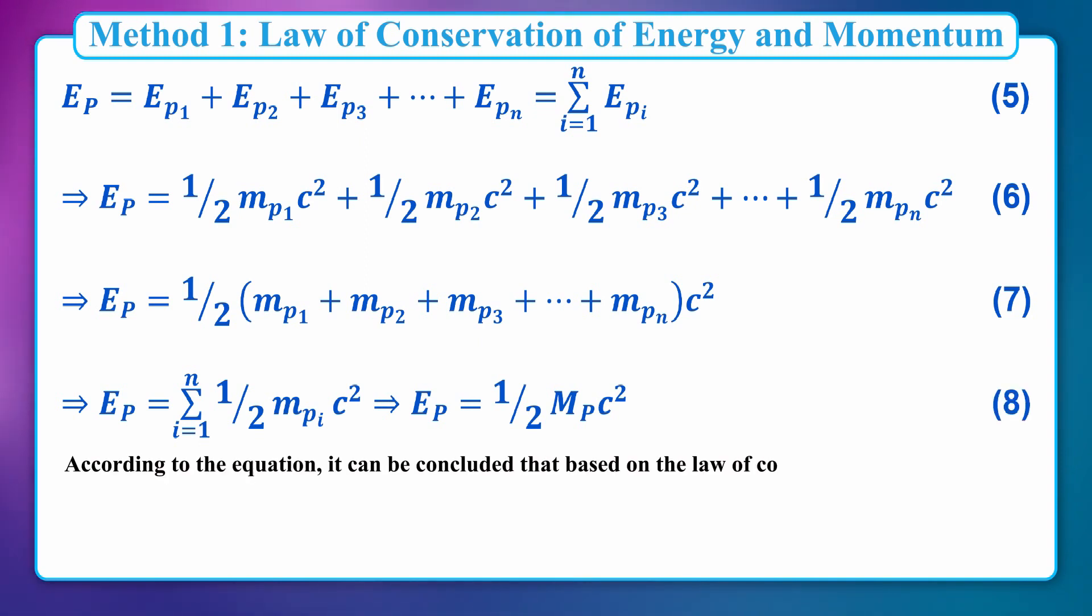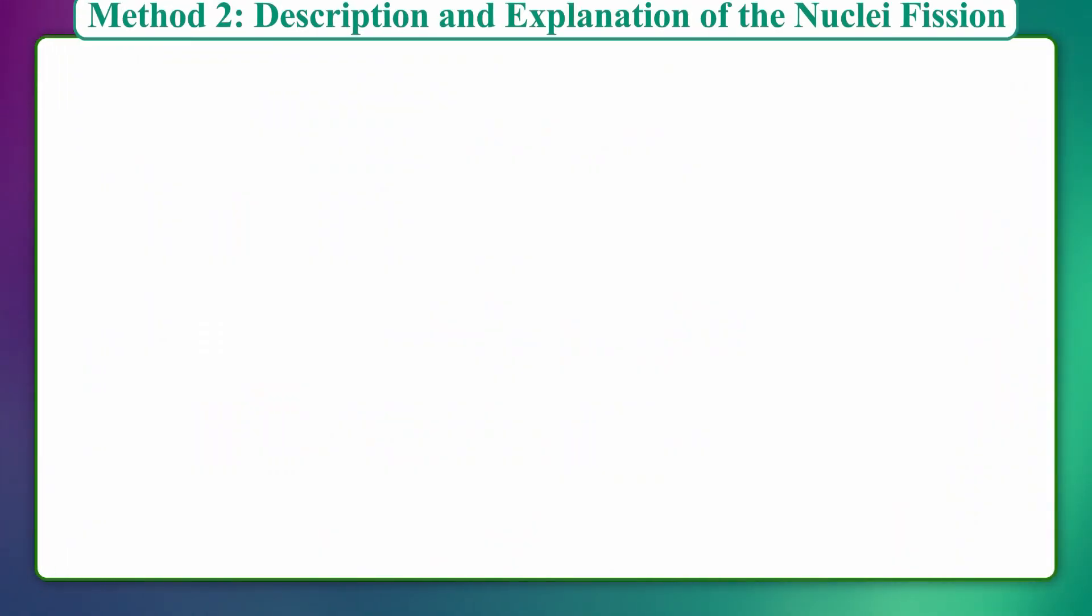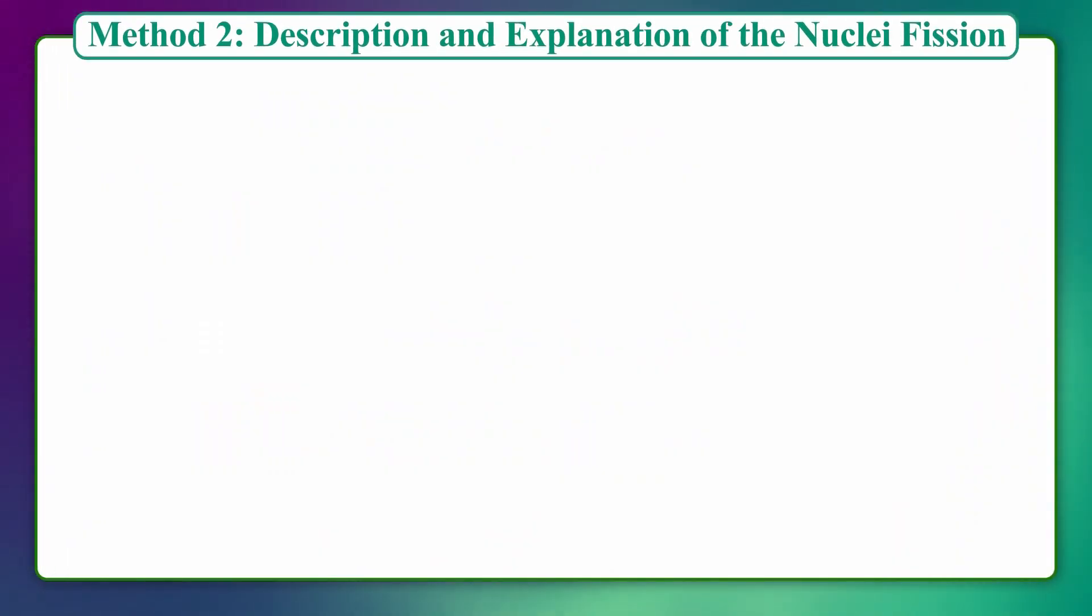According to the equation, it can be concluded that based on the law of conservation of energy, the energy of a proton equals its mass multiplied by c². This means the nucleus of atoms, where protons are located, rotates at the speed of light.